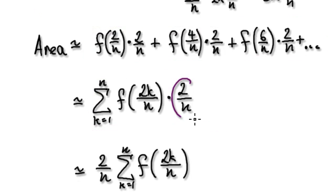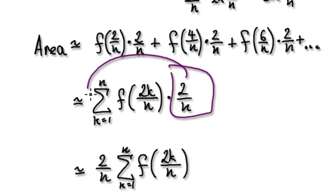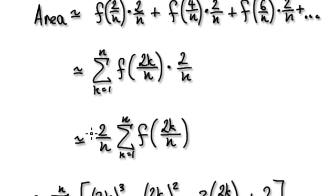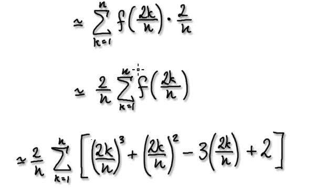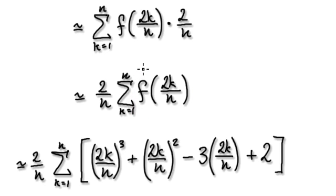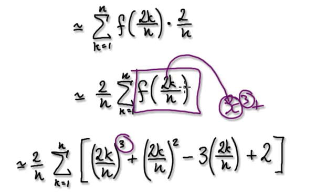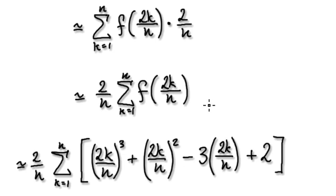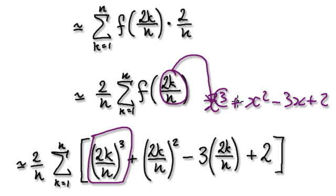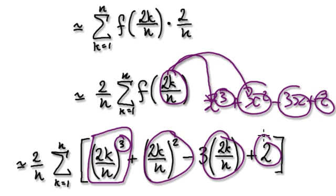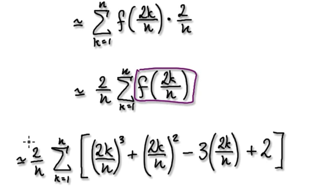From the sigma notation, because this here is a constant and k is what's changing, you can take the constant out. Now, this is your function. Remember, our function was x to the power of 3 plus x squared minus 3x plus 2. So you're putting 2k over n into the original function — that's why you get it to the power of 3. Putting it in gives you this expression, with each term corresponding to the original function evaluated at 2k/n.